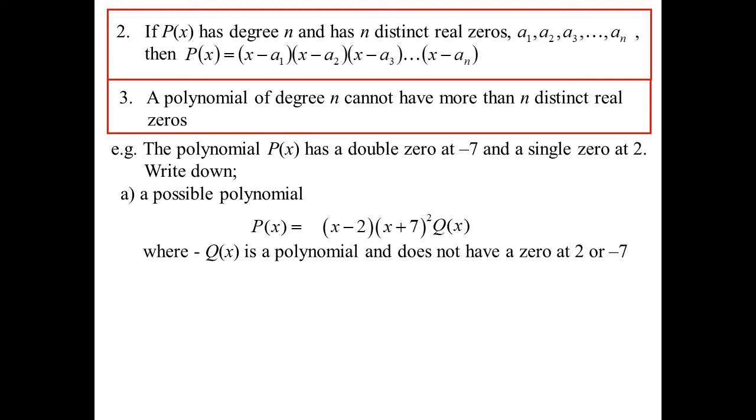If it had a zero at 2, then I would now have a double zero. Now, I've been told it's only got a single one. I could multiply the whole thing by k. It's questionable whether I really need to do that, because that k could be inside this random polynomial that I put there anyway. But I'm just highlighting, hey, I could have any multiple of that would still satisfy the situation.